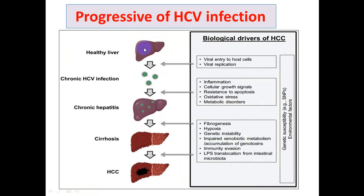When the liver is exposed to hepatitis C virus, the virus replicates in hepatocytes. After acute infection, hepatitis C virus leads to chronic infection characterized by inflammation, necrosis, cellular growth signals, resistance to apoptosis, oxidative stress, and metabolic disorder — all events associated with chronic HCV infection.